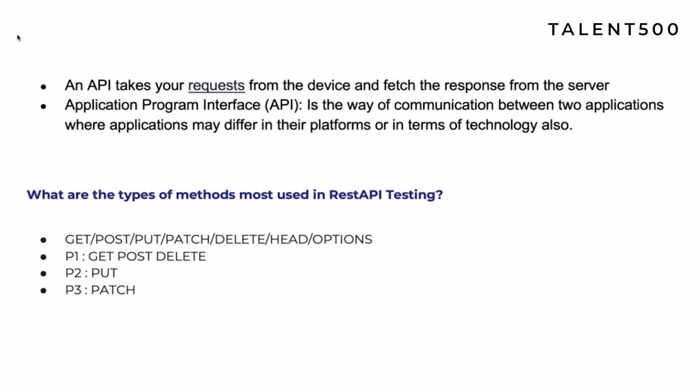There are usually five methods most frequently used: GET, POST, PUT, PATCH, and DELETE. If you answer all five fluently, it shows real-time experience. From my experience, the first priority is GET, POST, and DELETE — which are most frequently used. Second priority is PUT, and third priority is PATCH. Answering in this prioritized way demonstrates hands-on knowledge.